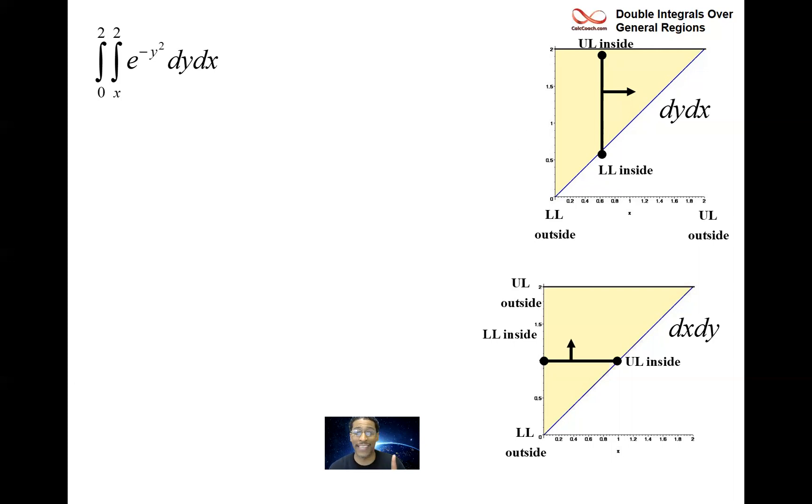We've switched the bounds because the integrand dictated to us that we must. We can't integrate y first. No way to find the antiderivative of our integrand with respect to y. But watch what happens if we integrate with respect to x first. So now we change it to be dx dy, same integrand, and now my bounds are lower bound inside a zero, upper bound inside a y, moved vertically upward from a lower bound zero to an upper bound of two.